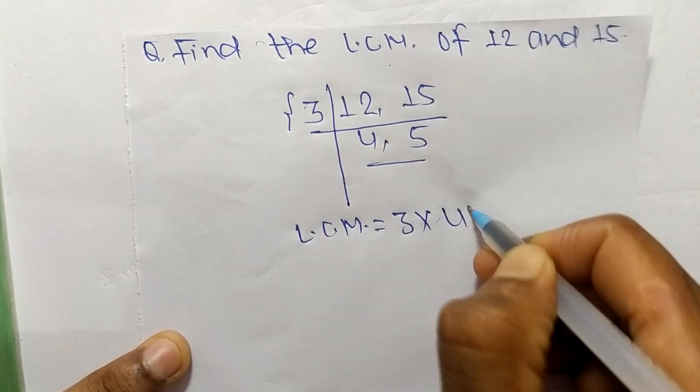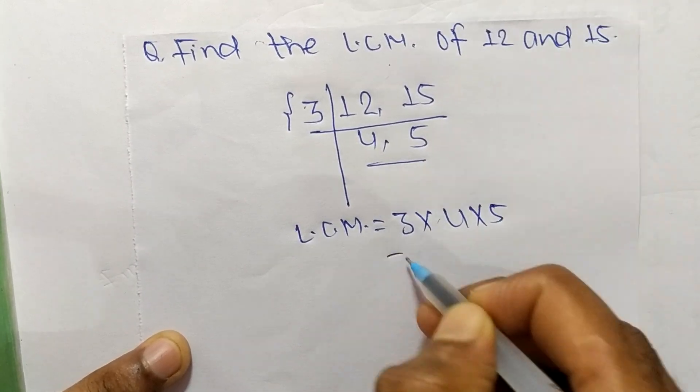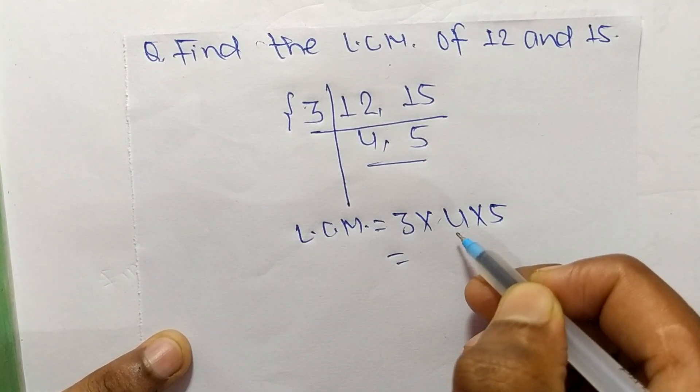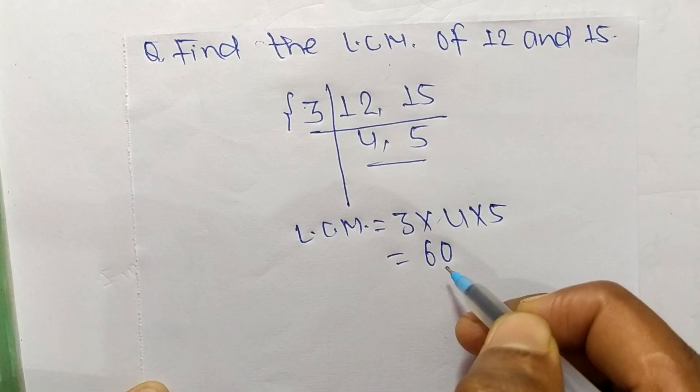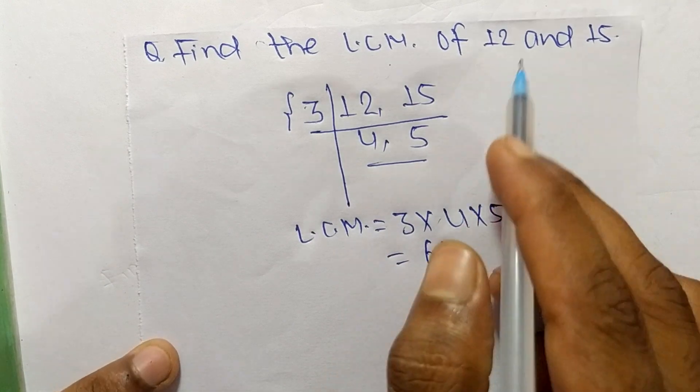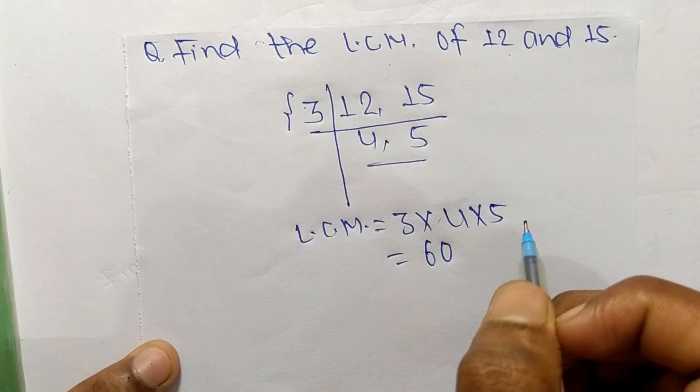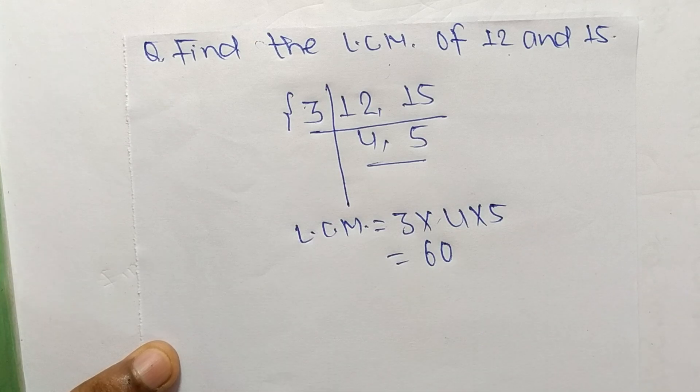So 3 times 4 means 12, and 12 times 5 means it is 60. So 60 is the LCM of 12 and 15. So this much for today and thanks for watching.